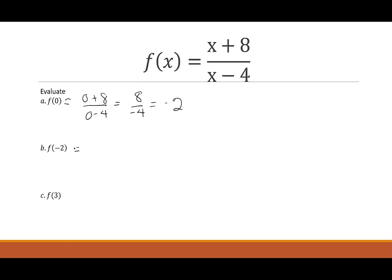Let's try that again with negative 2. I have negative 2 plus 8 over negative 2 minus 4. Negative 2 plus 8 gives me positive 6. Negative 2 minus 4 gives me negative 6. This reduces to negative 1. Let's try one more time. f of 3. I have 3 plus 8 over 3 minus 4.